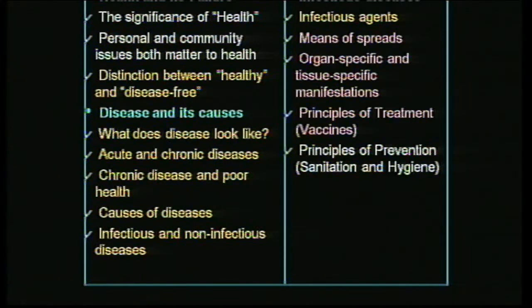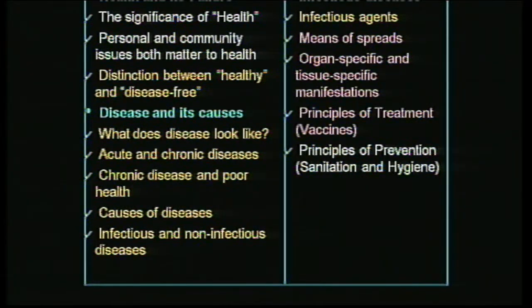Zoonotic diseases are those transferred from animals to human beings. We also discussed quite a lot on the immune system, which I'm going to focus on a little bit more today. We discussed organ-specific and tissue-specific manifestations and a little bit about principles of treatment. Today we are going to have some topics on principles of prevention, the significance of health, and personal and community issues responsible for bringing about health in the society.